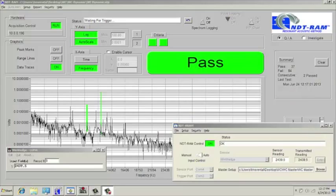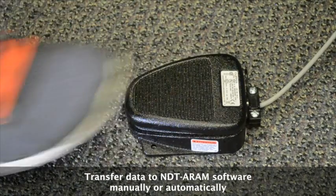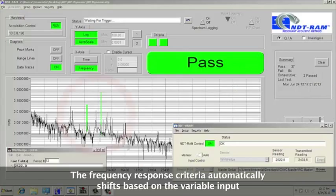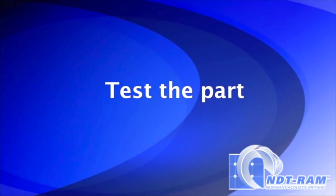Here the process variable of interest is weight variation. First, the weight of the part is captured by the NDT RAM software. The acceptable range for the resonance characteristics of the part shifts automatically to compensate for weight difference. The part is then impacted and its resonant frequency is established.